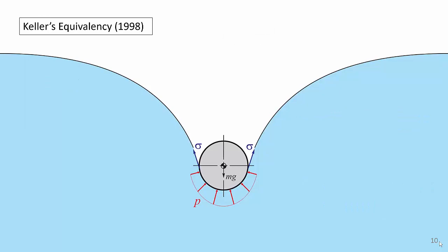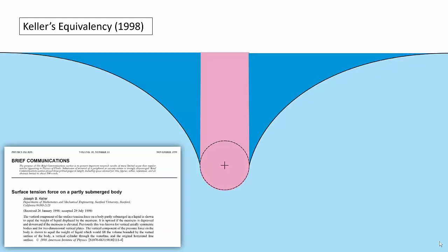I said I'd comment on how we know this is true, that the total buoyancy force for a floating object is the weight of the liquid displaced by the object plus the meniscus. This amazing result was first proven for the most general case surprisingly recently, in just 1998 by Stanford professor Joseph Keller. He used vector calculus and something called Gauss's divergence theorem, so I'll just give a non-mathematical explanation of the key result.